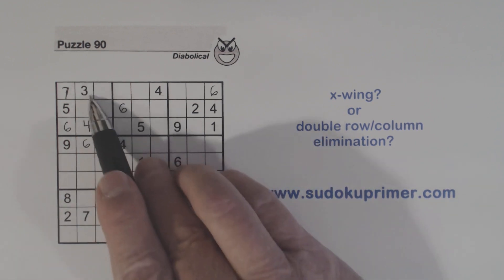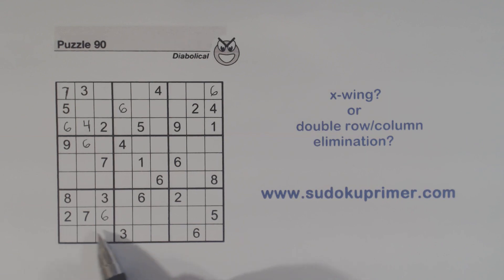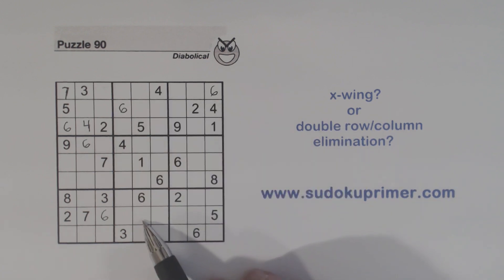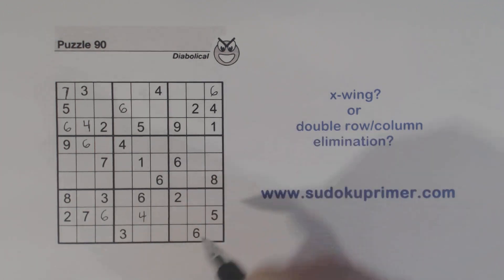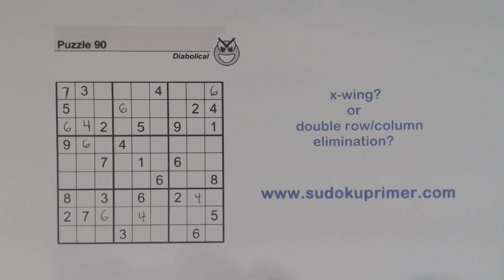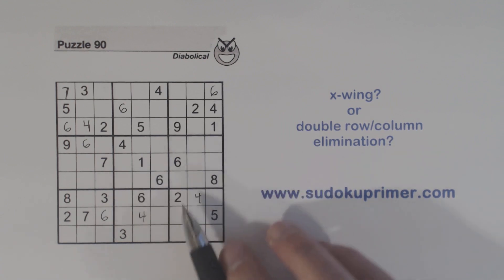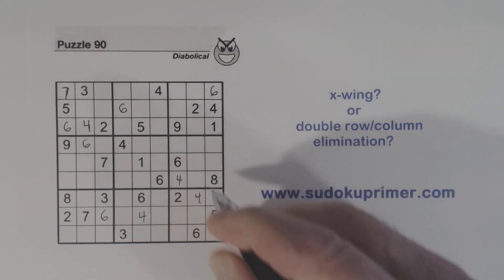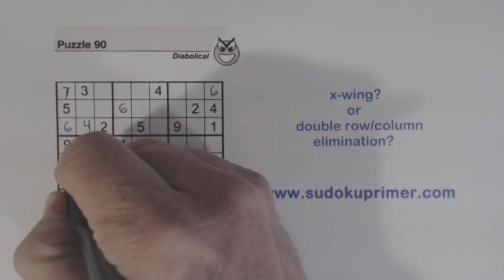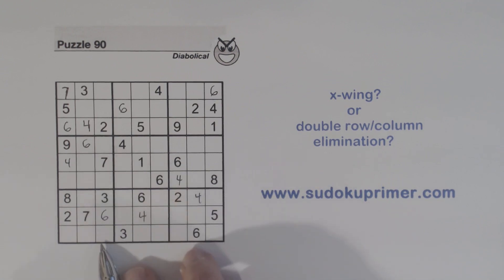We have a T pattern right here with a 4 right in the middle, so we know these are ghost 4's right here. We've got a 4 here and a 4 here. So one of these is a 4, and this can't be a 4 because of the ghost 4's there. And now we have ghost 4's there, a 4 there, and so we know that is a 4. Now we can do 4, 4, 4 right there. And we've got a 4, so that's a 4 right there. And we can fill in this 4 now because of that 4.